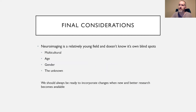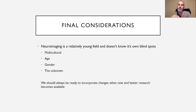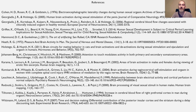Final considerations: we don't know the blind spots of neuroimaging. We've found quite a few over the years, like with Heath's study in 1972, and we'll most likely find more. We've mitigated some issues by comparing individuals' brains and finding similarities, but there could still be blind spots with multiculturalism, age, gender, and the unknown. We should remain open to future changes and continue to be humble in this industry. References are provided to follow up on, and please ask questions — there's much more from these references that wasn't covered.